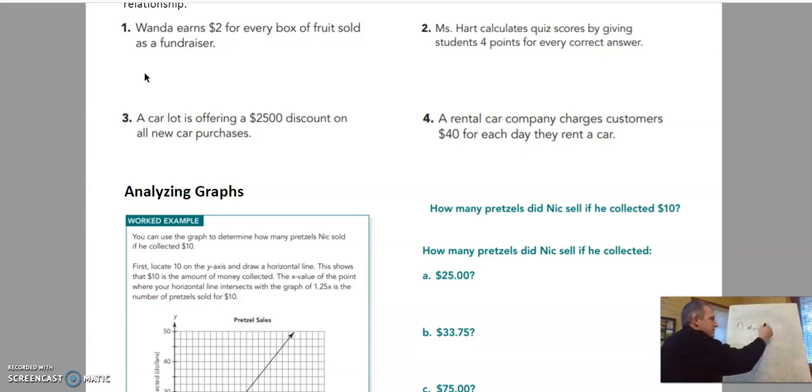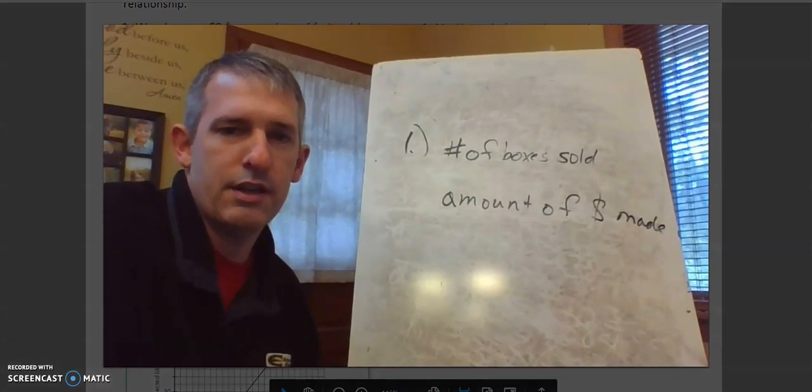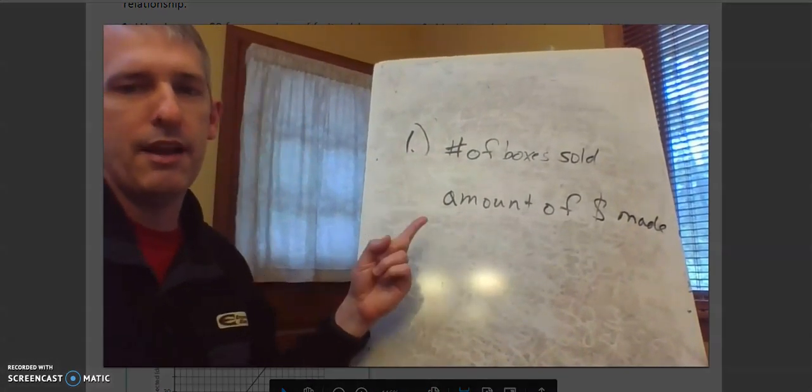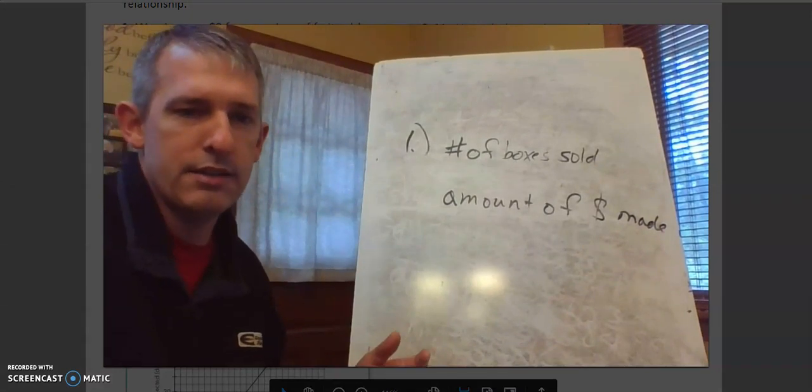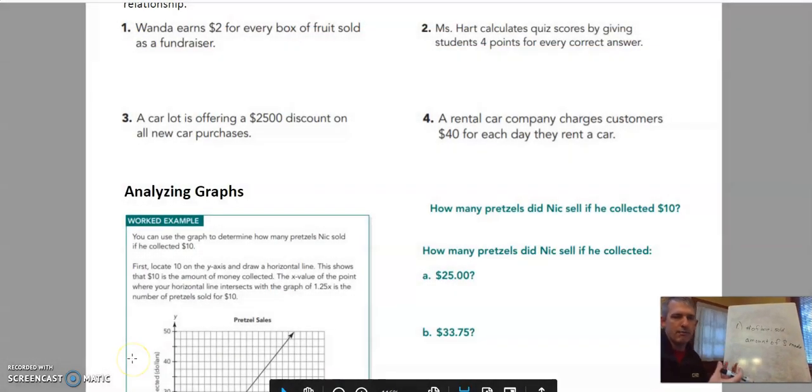Number of boxes sold is one of them. And the amount of money. So I'm kind of abbreviating here. Let's take a closer look. Number of boxes sold and the amount of money made. Now let's look at the situation. What depends on what?